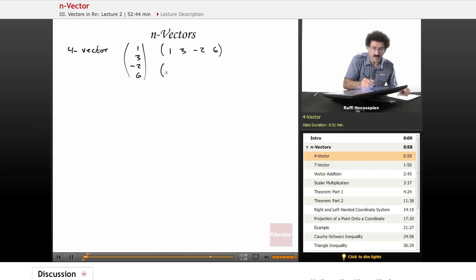Another representation is just regular coordinate representation, x, y, z, so on. So I could also write this as one, three, negative two, six. They all mean the same thing. It just depends on what it is that you're doing.